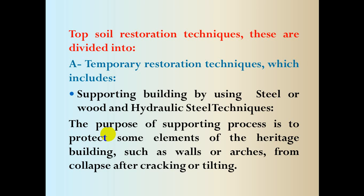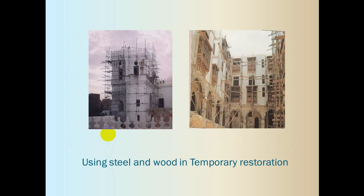The purpose of the supporting process is to protect elements of the heritage building — such as walls or arches — from collapse after cracking or tilting. As mentioned, we protect them if there are cracks being treated, or if a section suffers from a certain tilt and needs disassembly or specific treatment. We support the building temporarily. Here we see steel and wood used in temporary restoration — wooden braces holding the part the specialist needs to restore until the restoration process is complete, then they are removed.